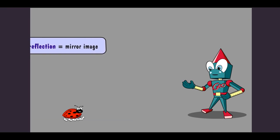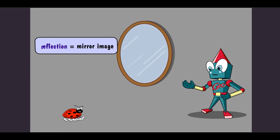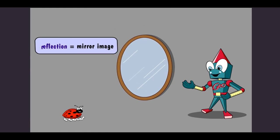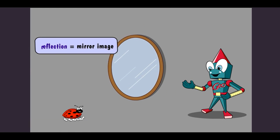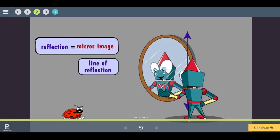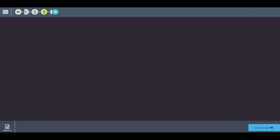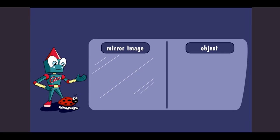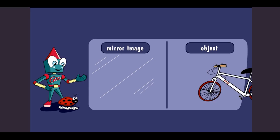A reflection is the mirror image of something on the opposite side of a line. Take a look. This is a mirror image, and it is on the opposite side of a line. Do you always need a mirror to see a reflection? A mirror is great when you want to see just your reflection, but you can see the reflection of other things by flipping them over.